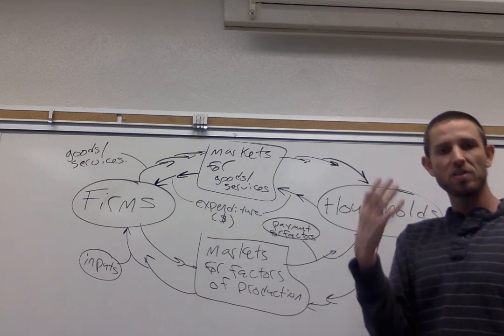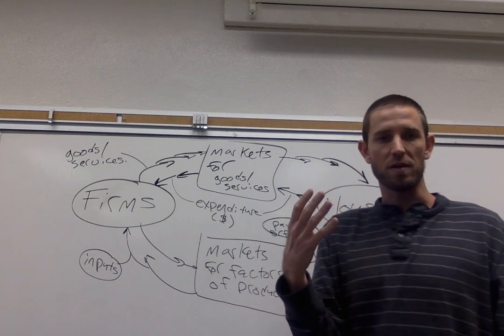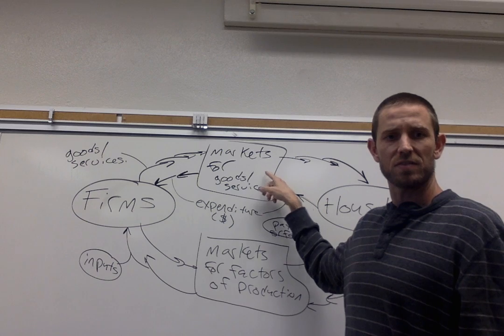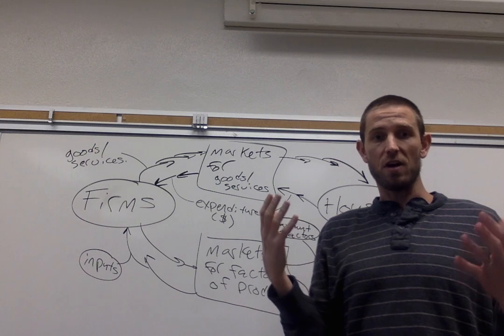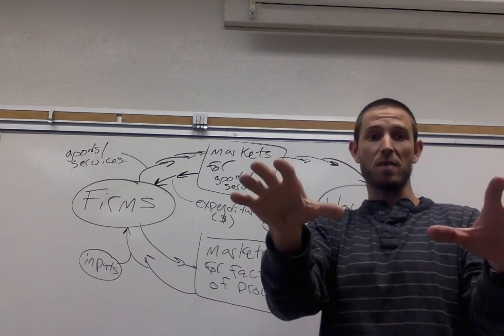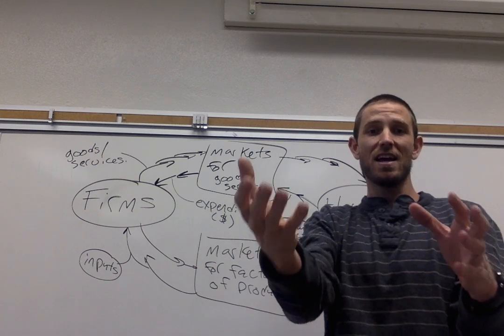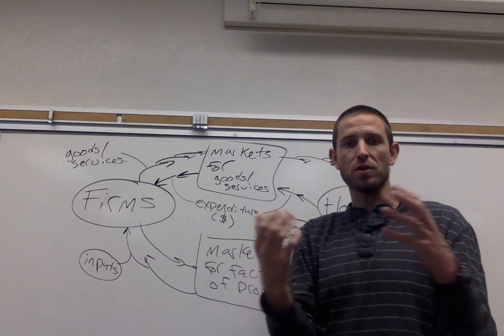The principal way, or maybe the most notable way, that we interact with firms is through these markets for goods and services. The process here is really straightforward. In the market for goods and services, what's occurring is that all of us as households are giving businesses money. So we pay them, and in exchange for paying businesses, they're going to give us stuff—all of the clothing and cars and food that we consume.